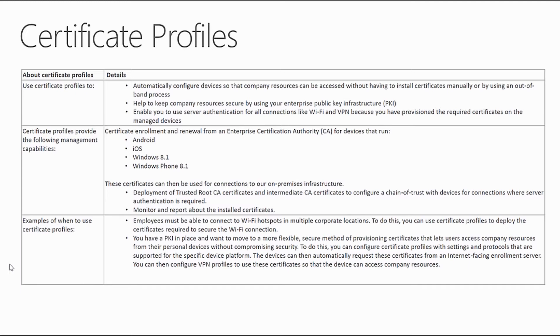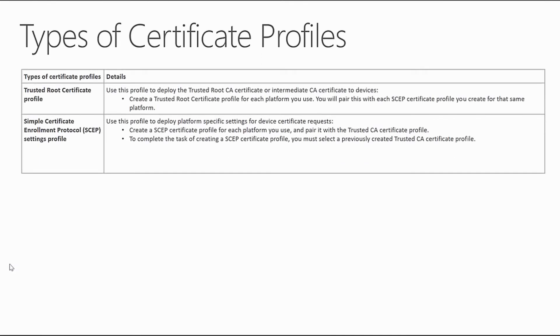We can use certificate profiles in scenarios like employees needing to access corporate Wi-Fi from different locations — we want to push down a common Wi-Fi profile to those devices. In addition, we can leverage these certificates to authenticate devices through 802.1X or through a VPN profile for remote access. There are two main certificate profile types. One is the trusted root certificate profile, used to deploy the trusted root certificate or an intermediate CA root to a machine. There's also the SCEP settings profile, which we can leverage to trust certificate profiles against a trusted CA for Wi-Fi and VPN profiles.